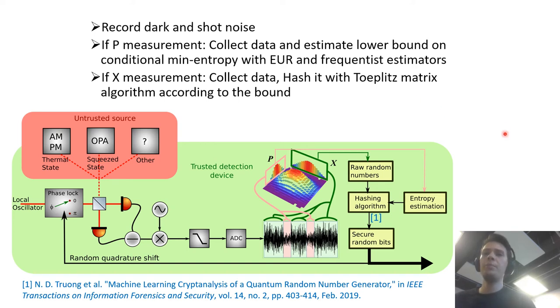And also the hashing algorithm that we use is the Toeplitz matrix algorithm and it does require random numbers. So in our particular case this seed and the random numbers for the hashing were extracted using another QRNG that is a trusted device one and in this conference there is a talk about this QRNG that I recommend you follow.